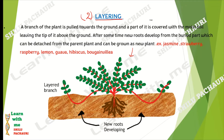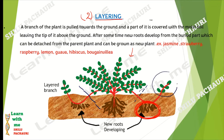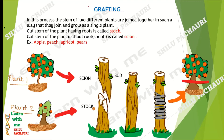The second type of artificial propagation is layering. A branch of the plant is bent and buried in soil, while the leaves remain above the ground. After some time, new roots start developing from the buried part of the branch. The branch is then separated from the parent plant and can grow as a new plant. Layering is common in jasmine, strawberries, raspberry, lemon, guava, hibiscus, and bougainvillea.